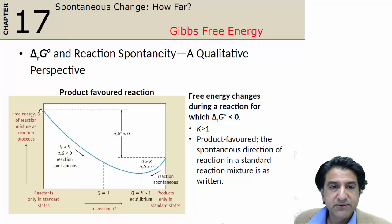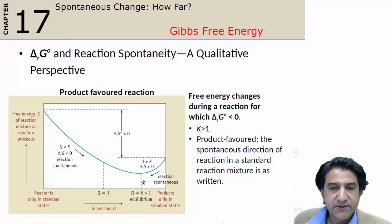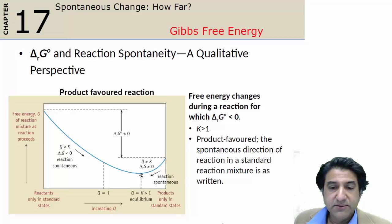That is the difference between products in their standard states and reactants in their standard states. In this case it's an exergonic reaction, meaning delta G is less than zero. Delta G0 is related to the end points — it's not related to the drop in G coming from the 100% products to the equilibrium point. That drop comes from the change in concentrations of the substances away from their standard conditions to the equilibrium conditions. So here it's standard reactants going to non-standard equilibrium conditions, and here it's standard products going down to non-standard equilibrium conditions.